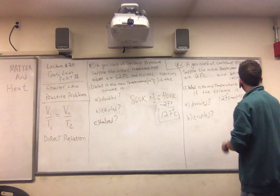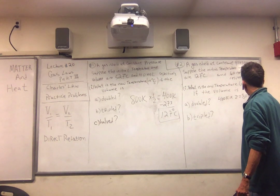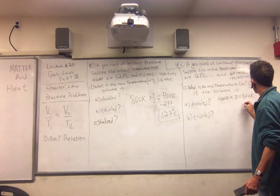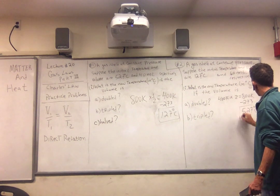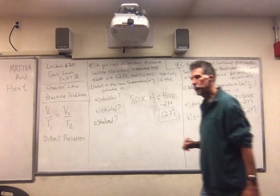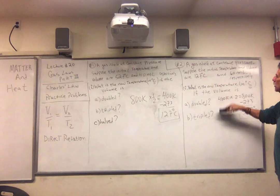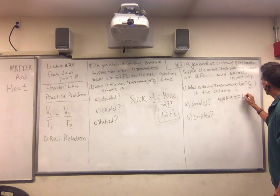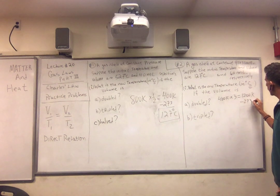What are we doing? We're taking 400 Kelvin and doubling it, so we get 800 Kelvin. The answer back in Celsius — subtract 273 — and that should be 527 degrees Celsius. And then finally, we're going to triple the temperature, which was 400 Kelvin. So if we multiply this by 3, we get 1,200 Kelvin. To go back to Celsius, minus 273, and we get 927 degrees Celsius.